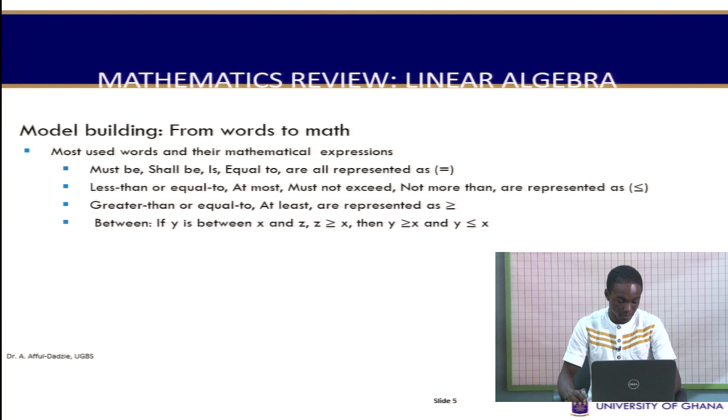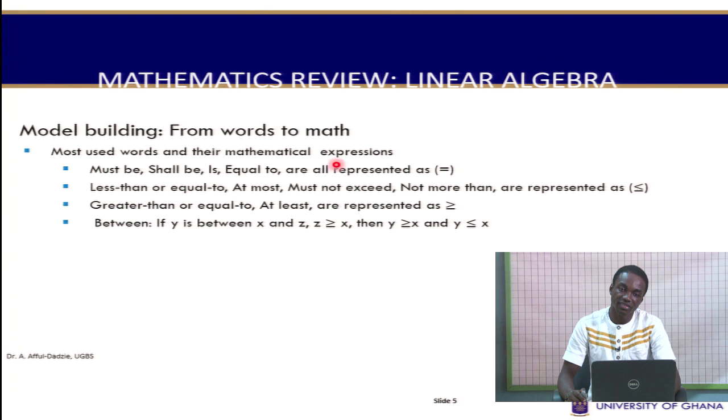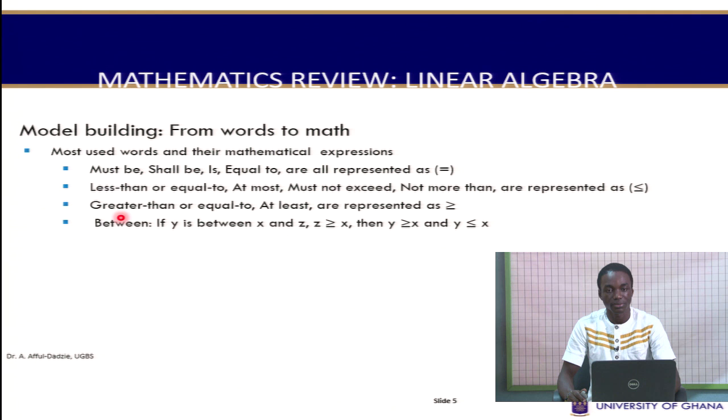In our mathematical model building, we encounter certain words that have mathematical connotations. If you encounter words like 'must be,' 'shall be,' or 'equal to,' you represent them with the equal-to symbol. Words like 'less than or equal to,' 'at most,' 'must not exceed,' or 'not more than' are represented using the less-than-or-equal-to symbol.